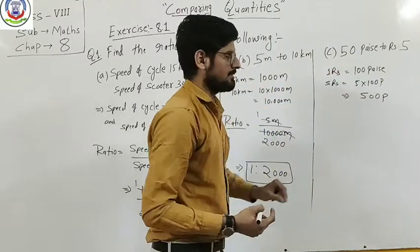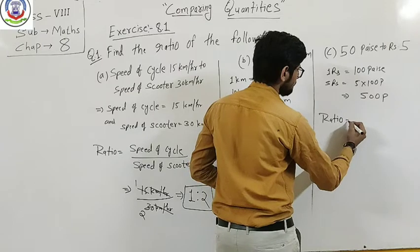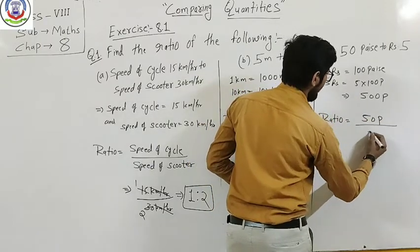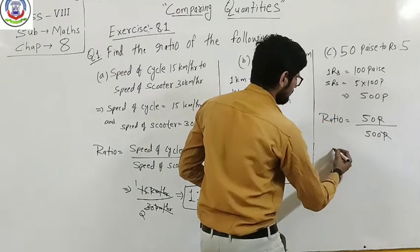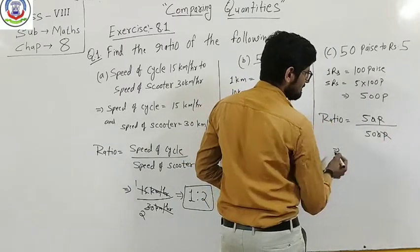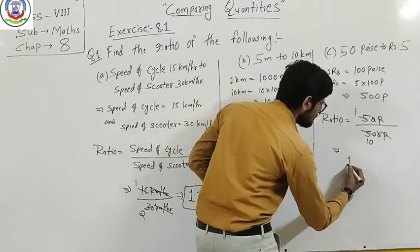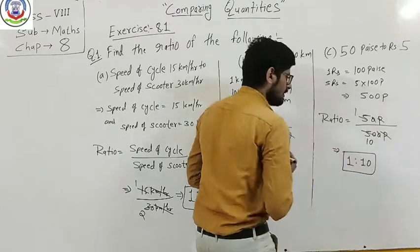50 paise to 500 paise. So our ratio is 50 paise by 500 paise. Units cancel out, zeros cancel, 5 and 50 gives us 10. So our ratio is 1 is to 10.